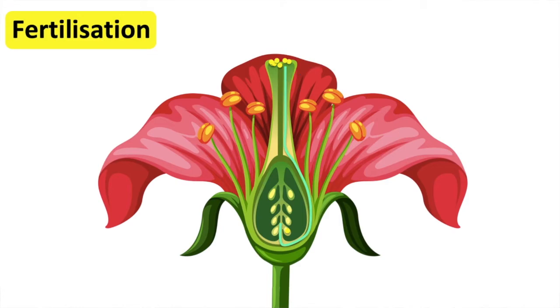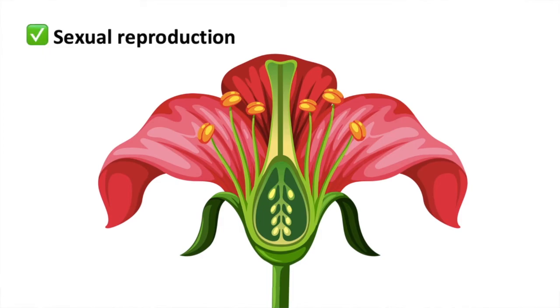Once fertilisation is complete, the ovules become seeds and the rest of the carpel becomes a fruit. The petals of the flower die in this process. For example, an apple which contains seeds inside.